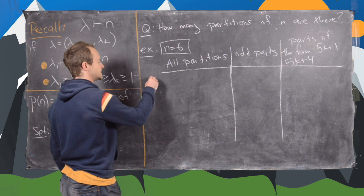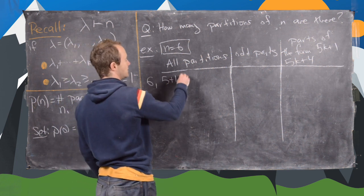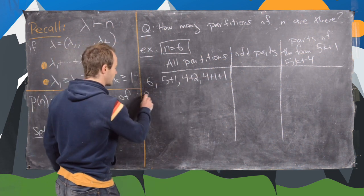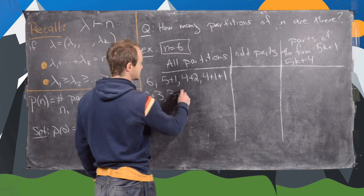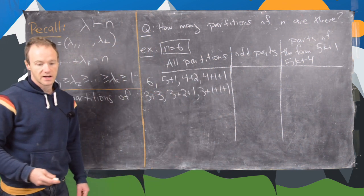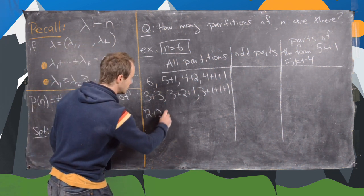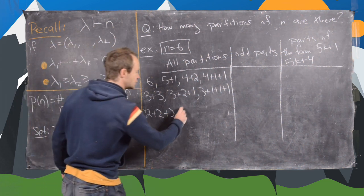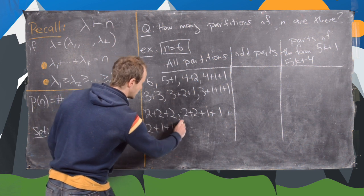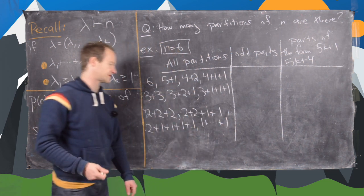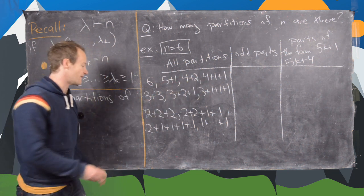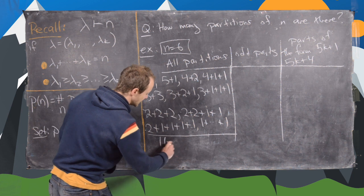Looking at all partitions of 6: we have 6; 5+1; 4+2; 4+1+1; 3+3; 3+2+1; 3+1+1+1; 2+2+2; 2+2+1+1; 2+1+1+1+1; and finally all 1s. So we have a total of 11 partitions.